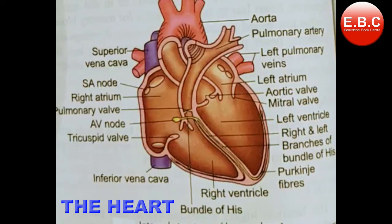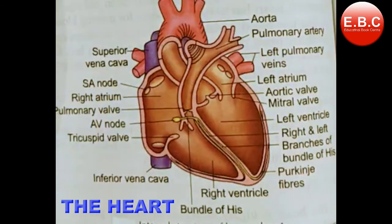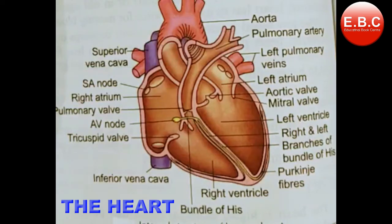The human heart is made of cardiac muscles — also called myocardia — which contract rhythmically by self-generated impulse.